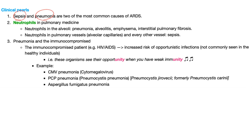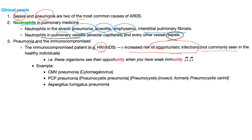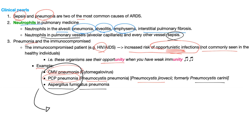Sepsis and pneumonia are two of the most common causes of ARDS. Neutrophils in the alveoli — think pneumonia, alveolitis, emphysema, interstitial fibrosis. Neutrophils in the pulmonary vessels — think sepsis. Pneumonia in the immunocompromised: if you have HIV, you have increased risk of opportunistic infections not commonly seen in healthy individuals — they see their opportunity when immunity is weak. Examples include CMV pneumonia, PCP pneumonia (also known as Pneumocystis pneumonia by Pneumocystis jirovecii; old name Pneumocystis carinii), and Aspergillus fumigatus pneumonia. These organisms are not seen in immunocompetent patients.